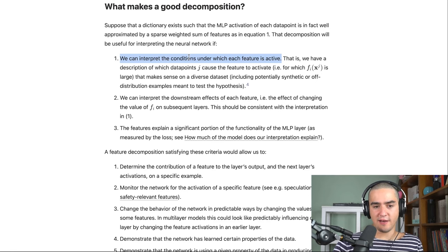So the three goals for them is you can understand why a feature is active. So what causes a feature to activate? So in this case, we do have like these things like Arabic, Hebrew, DNA, et cetera, that are very interpretable. So we know what caused a feature to be active, which is pretty cool. Something about knowing the downstream effects of each feature. If you change the value of a feature, what does it change on the next layers? And then something about making sure that the features you've extracted, they explain a large fraction of your MLP layer.